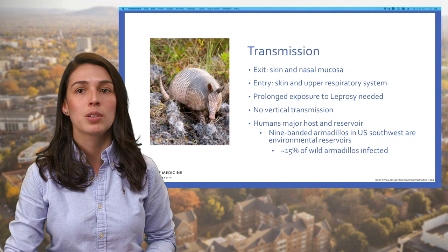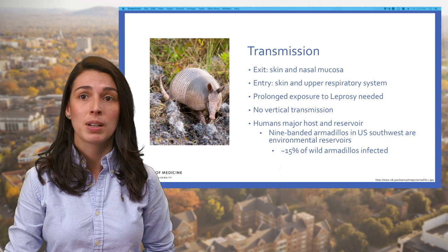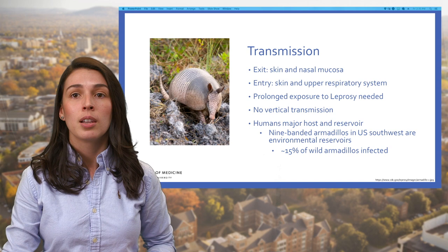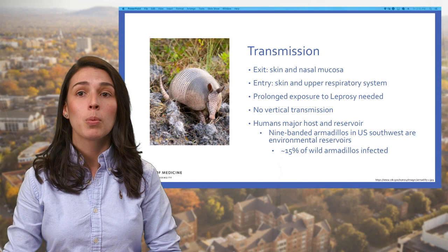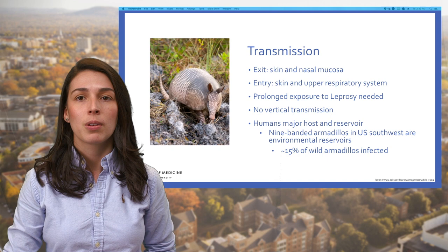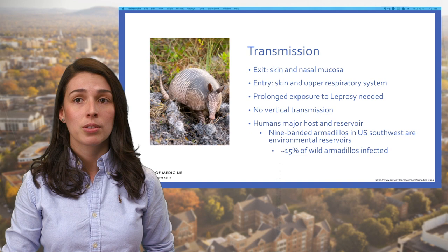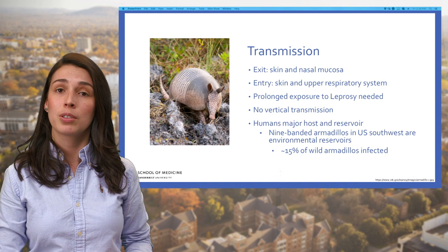It is not known exactly how Hansen's disease spreads between people. Two exit routes of the lepra bacteria have been described: the skin and the nasal mucosa. Lepromatous cases show large numbers of organisms deep in the dermis, but whether they reach the skin surface in sufficient numbers is doubtful. The entry route of the mycobacterium into the human body is also not definitively known; the skin and upper respiratory tract are most likely, though recent research increasingly favors the respiratory route.